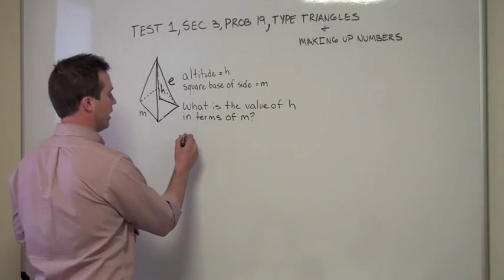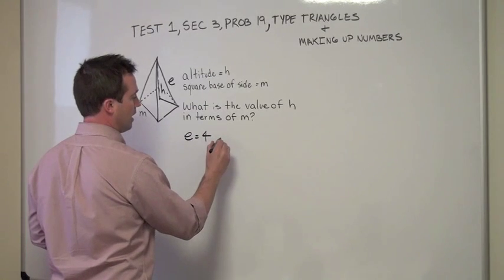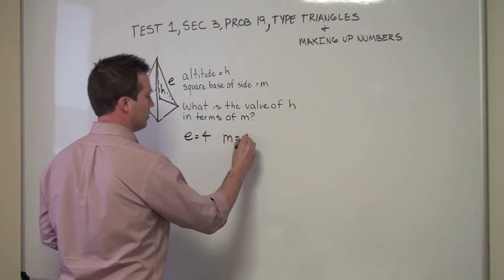So what we're going to do here is we're going to go ahead and say that the edge length is equal to 4, and since we know that E equals M, then we're also going to say that M equals 4.